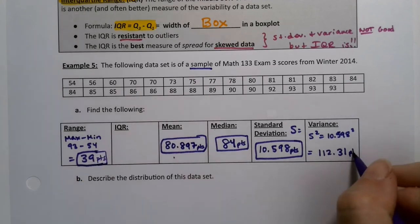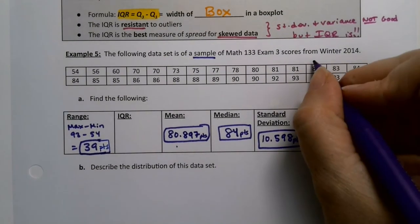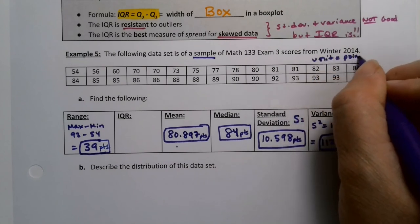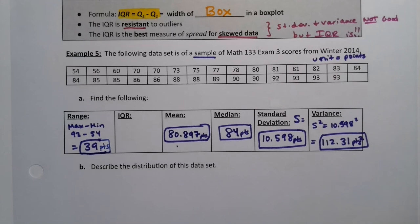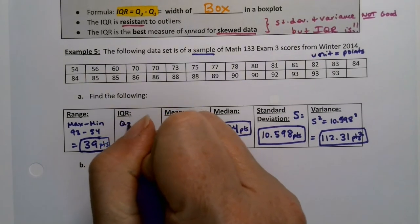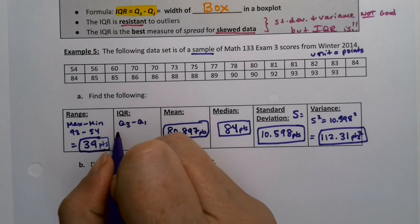This is points squared. Useless, but nevertheless, there you have it. So then the IQR is Q3 minus Q1. This is the only new thing. Everything else is review. We've already learned how to find all these other ones.